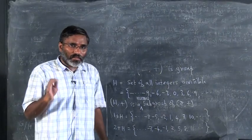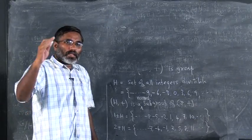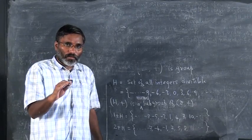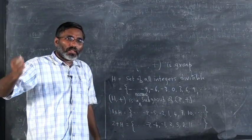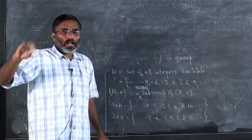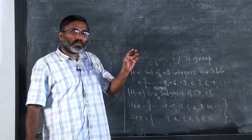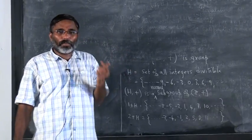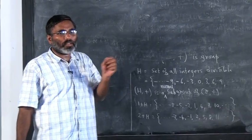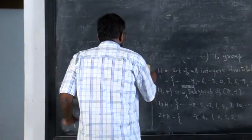If you have an orthogonal matrix, its determinant can be plus 1 or minus 1. Take all matrices whose determinant is plus 1 - they are in SO2. What is there in O2 that is not in SO2? All those matrices whose determinant is minus 1. If I multiply some matrix whose determinant is minus 1 with those matrices, then I will get all other matrices. The simplest matrix whose determinant is minus 1 is 1, minus 1 along the diagonal and 0 along the off diagonal.